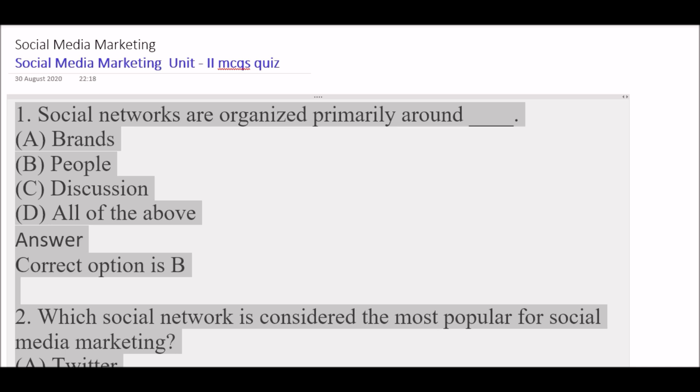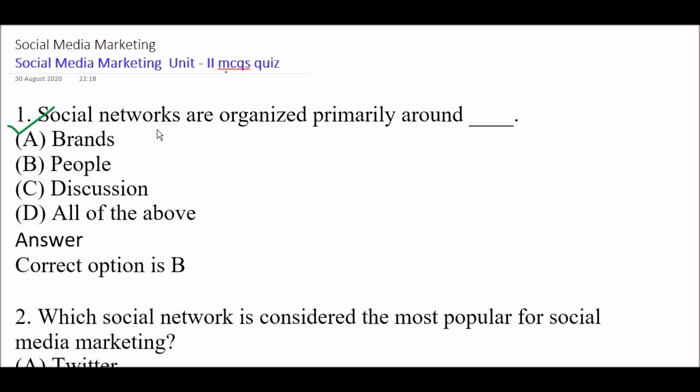And guys, they all are sample questions for you, for your upcoming examination. Your first question is: social networks are organized primarily around — Option A: brands, Option B: people, Option C: discussion, Option D: all of the above. Right answer is Option B: people. Social networks are organized primarily around people.